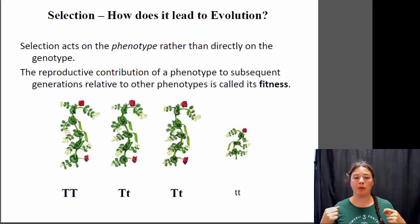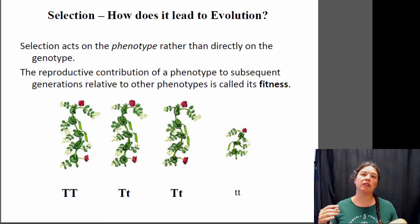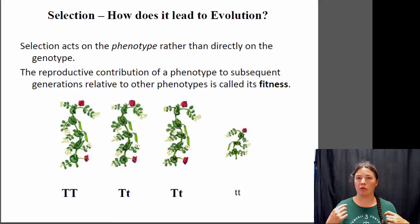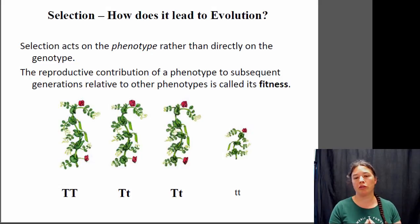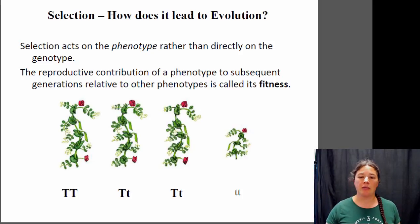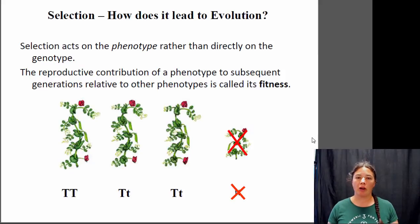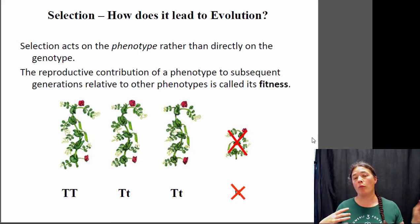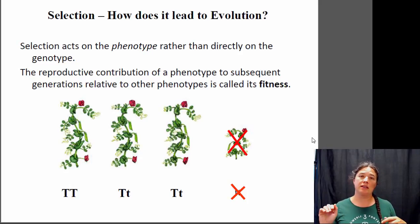Let's take a look at this example with peas. We have a gene for pea height with two alleles: a tall allele and a short allele, and tall is dominant over short, so heterozygotes are also tall. Let's say for some reason the pollinator of these peas — some butterfly — doesn't like to go too close to the ground, so it doesn't pollinate the short individuals. Short individuals don't get to breed and are removed from the population. The heterozygotes and the homozygous dominant individuals have the same fitness — they both have the same chance of surviving and reproducing.